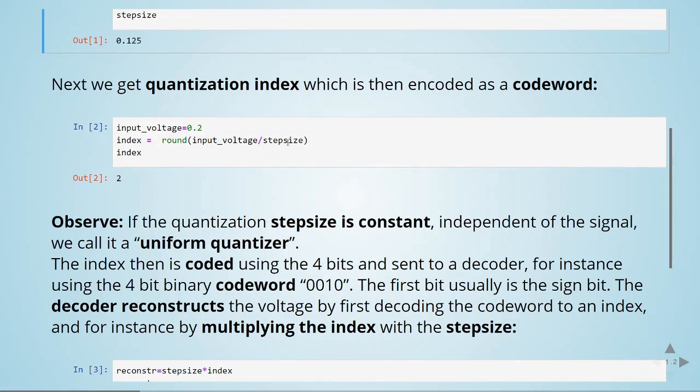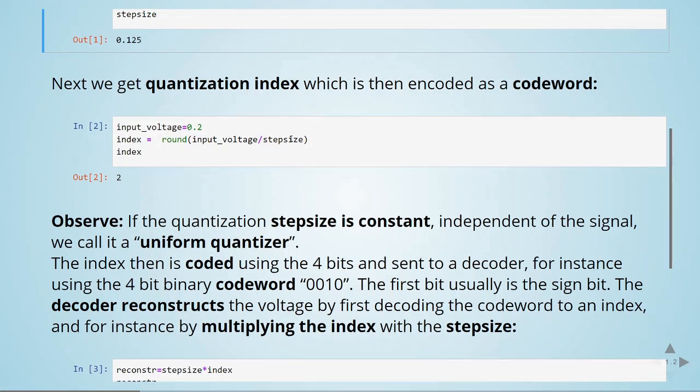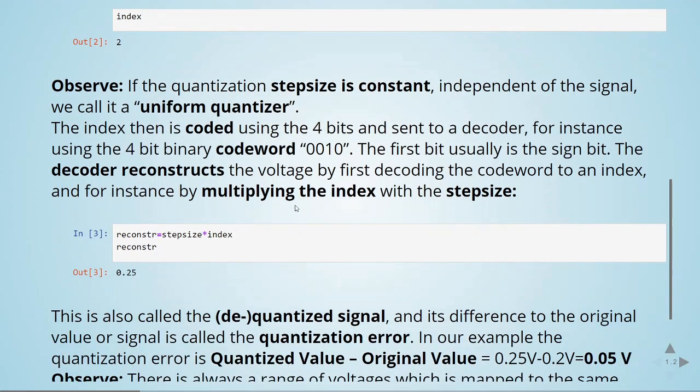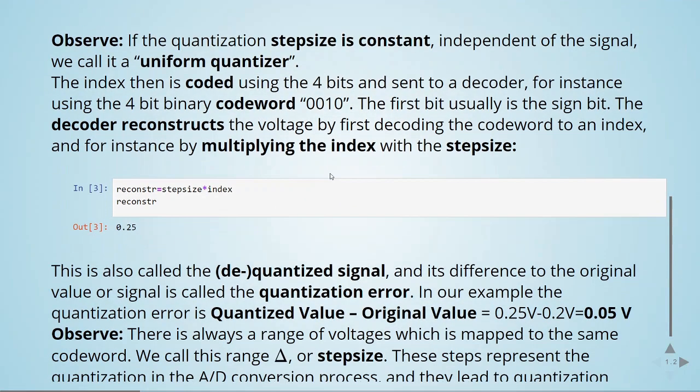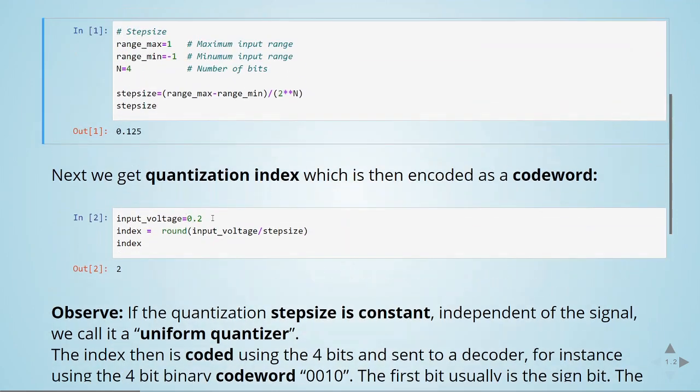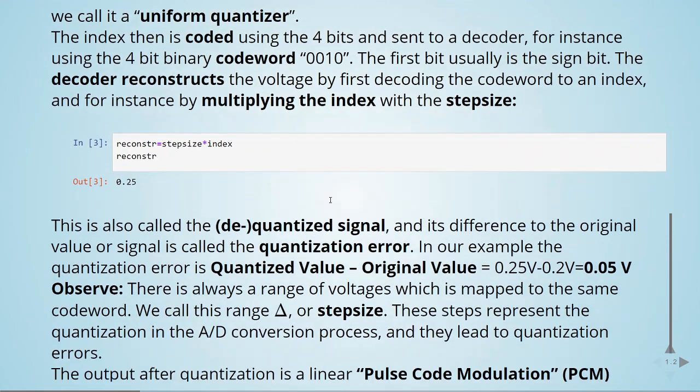Then we'll multiply the index by the step size and we'll have a reconstructed value of 0.25. This is the dequantized signal. We can see that it's already different from our original input voltage. It was 0.2. And this is what is called the quantization error.